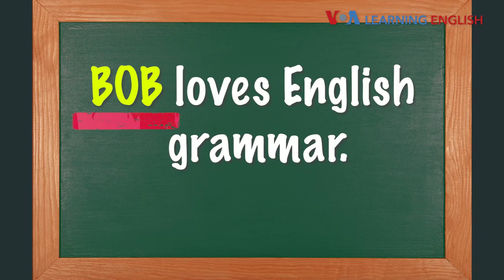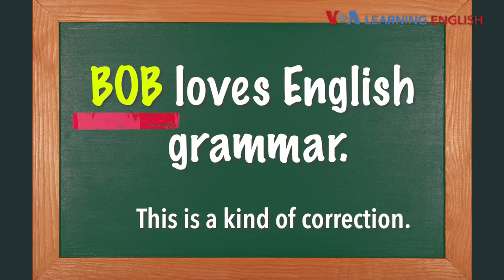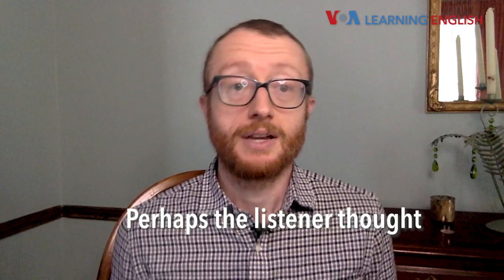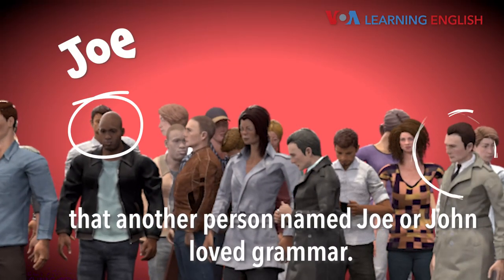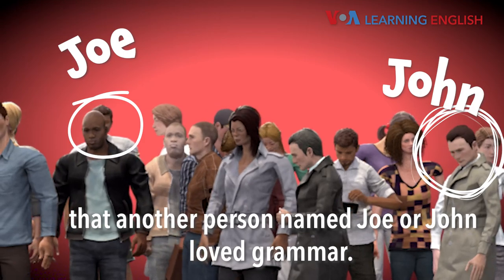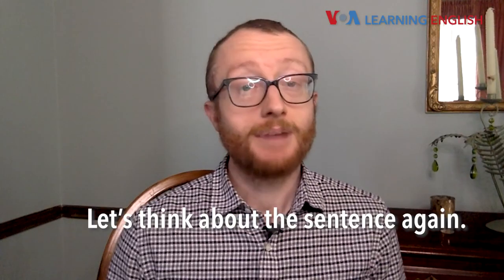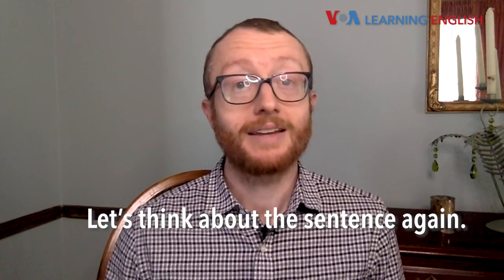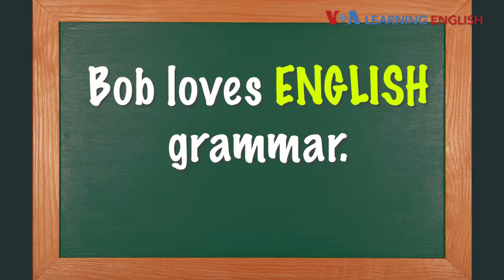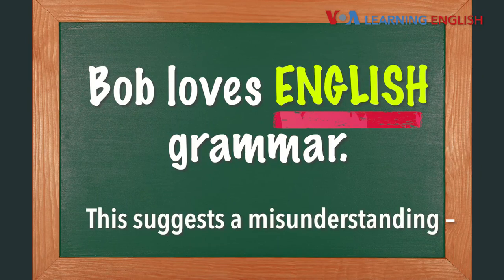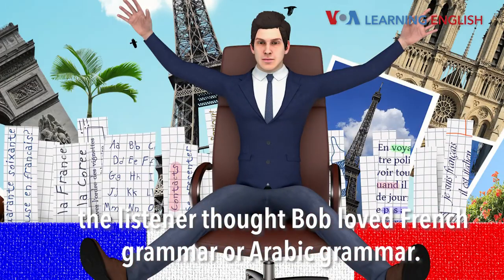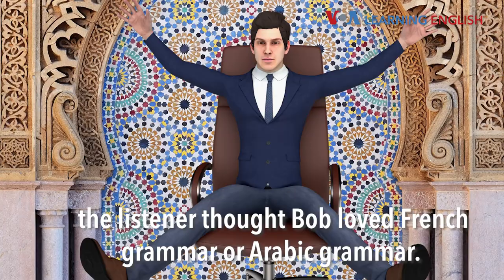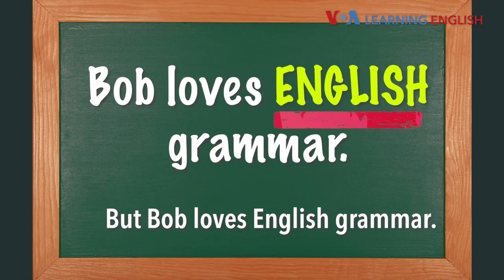Bob loves English grammar. This is a kind of correction — perhaps the listener thought that another person named Joe or John loved grammar. Bob loves English grammar. This suggests a misunderstanding; the listener thought Bob loved French grammar or Arabic grammar, but Bob loves English grammar.